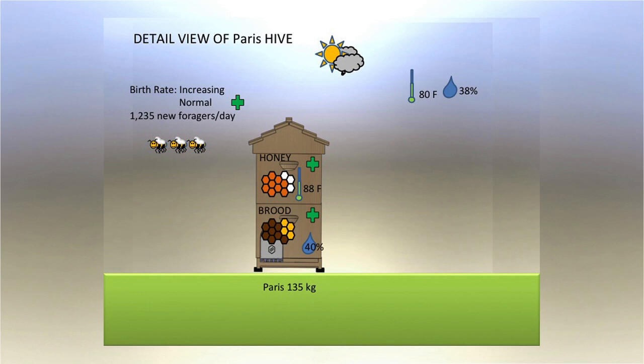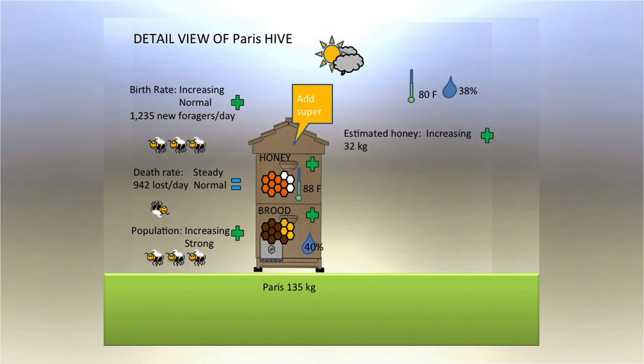Temperature, humidity, foraging activity, weight and light are measured constantly. Its software then uses all this information to rate the hive performance with a color code, and estimates bee population and health.